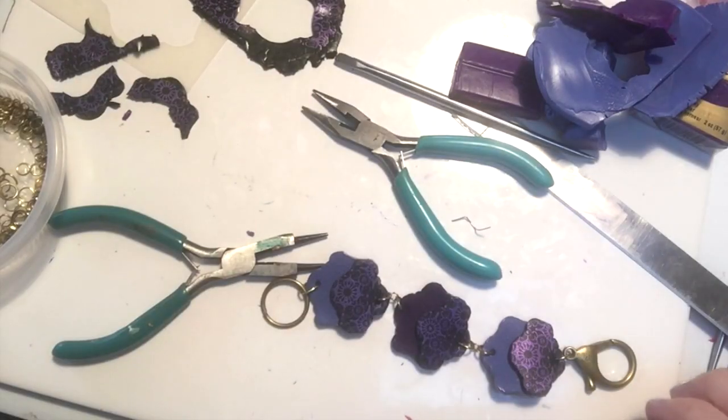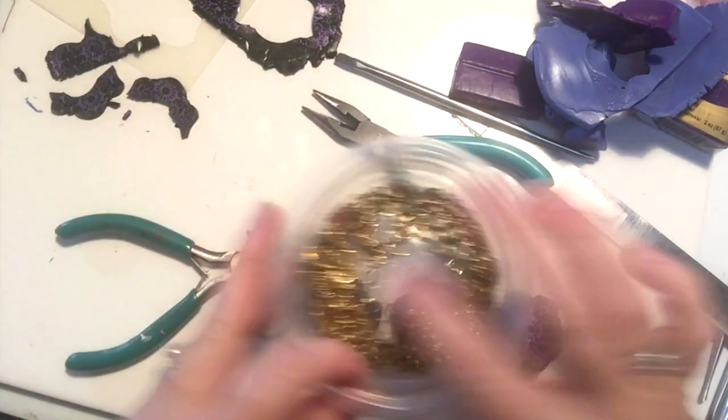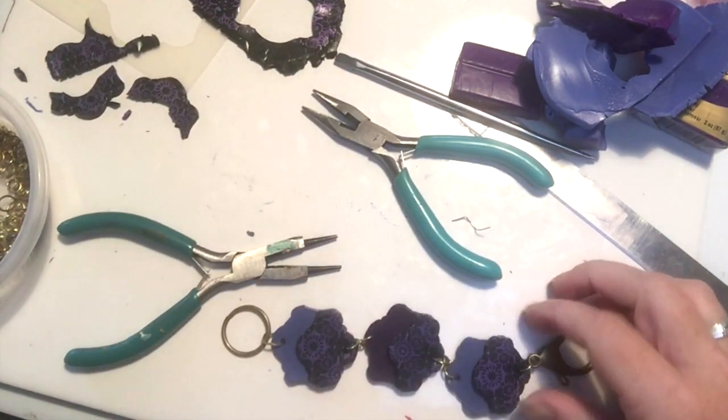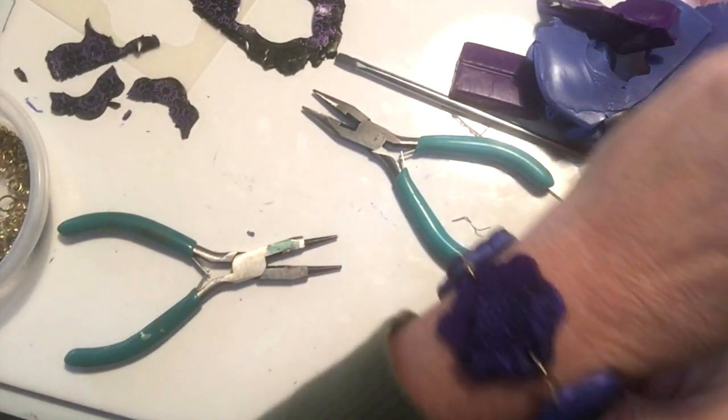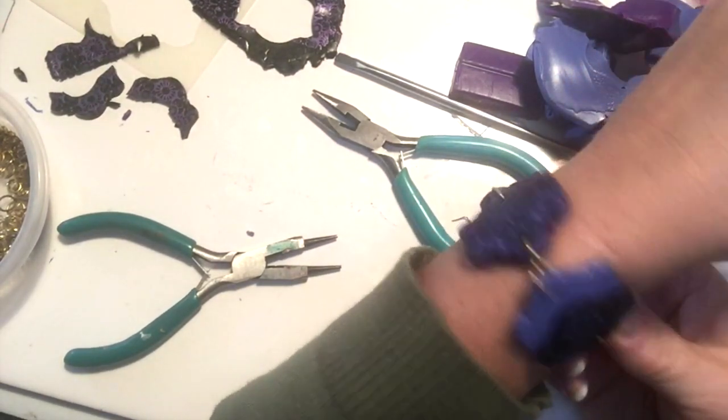Once the spray sealant had dried, I went ahead and just used some gold jump rings and added a jump ring to each of the beads and then a jump ring to connect each of the pieces together and added my closure and the bracelet is ready to wear. You can see how the beautiful flash you get from that paint.